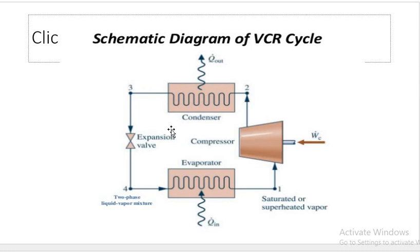This diagram is used in the exam: compressor, condenser, expansion valve, evaporator. The compressor is used in the vapor state — it pumps the gas. The compressor will increase the pressure in the gas. If the temperature increases, the boiling point increases.